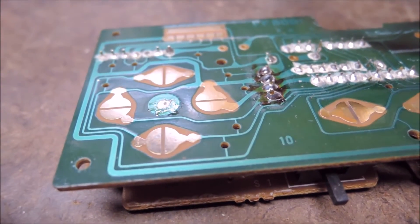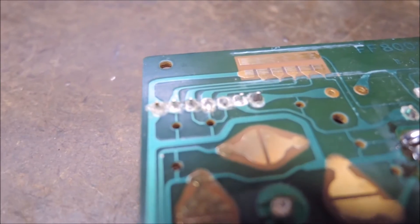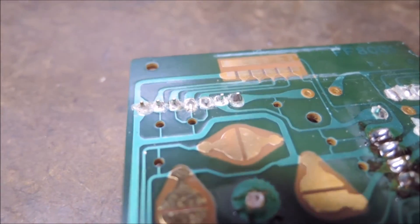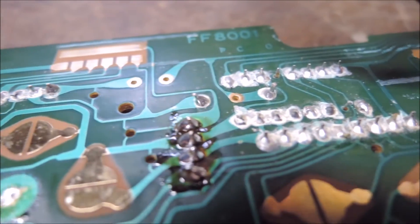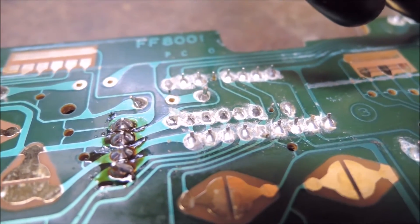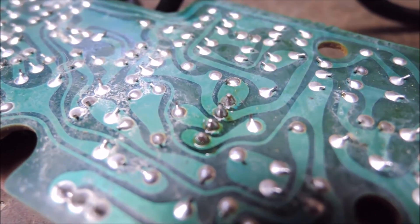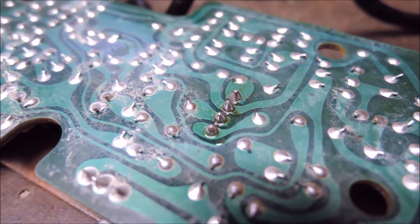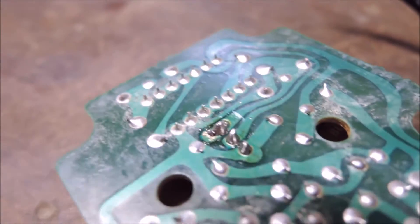This little fuzzy stuff here that you're seeing is actually flux, it's not corrosion or anything like that. This is just the old flux that was on here from when this board was originally assembled. I re-soldered these, these were fine. Nothing was broken here.